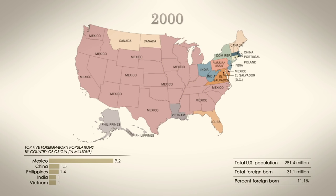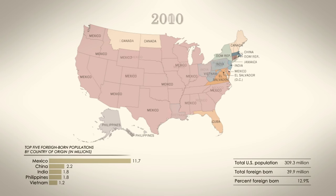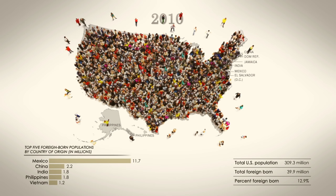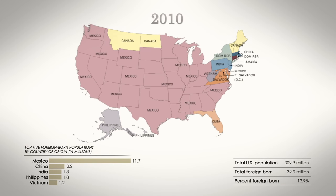In the year 2000 census, the number of Mexican-born immigrants surpassed 9 million. It's also notable that India was the top country of origin in 3 states. The 2010 census reveals exactly why America is quickly becoming so diverse — only 5 states, all of them bordering Canada, received the most immigrants from a majority white country.